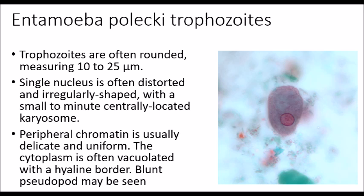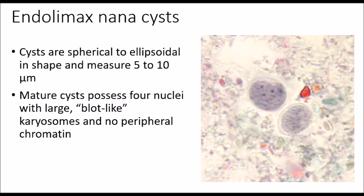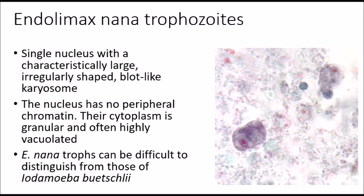Endolimax nana cysts are spherical — hence the name nana — and small, measuring about 5 to 10 microns. The mature cysts possess four nuclei with large, blot-like karyosomes that lack peripheral chromatin. The Endolimax nana trophozoites have a single nucleus with a characteristic large, irregularly shaped, blot-like karyosome. The nucleus has no peripheral chromatin, and the cytoplasm is granular and often highly vacuolated. E. nana trophs can be difficult to distinguish from those of Iotamoeba bushleyi.